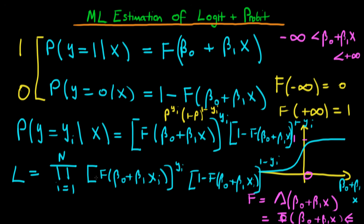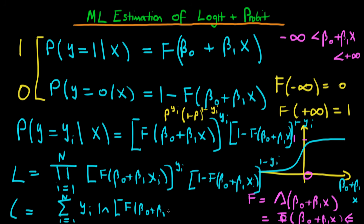Likelihood functions are quite difficult to deal with because we'd essentially be trying to differentiate a product. So what we typically do is take the log of the likelihood and maximize that instead. The benefit of taking the log is that the product becomes a sum: the sum from i equals 1 to n of y_i times log(f(beta 0 + beta 1 * x_i)) plus (1 minus y_i) times log(1 minus f(beta 0 + beta 1 * x_i)).